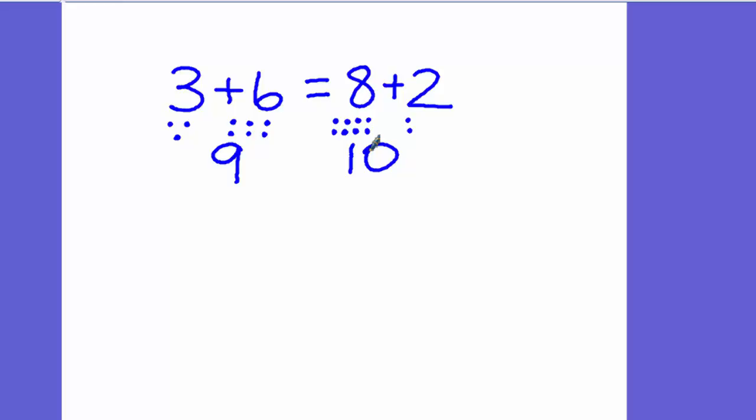Very good. Make sure you write your 10 underneath the 8 and the 2. And now let's look. Do you notice something? One side of the equal sign is 9 and the other side equals 10. Are these two sides exactly the same? No, they are not. They are different, meaning they are not equal. So that tells us the statement 3 plus 6 equals 8 plus 2 is false.